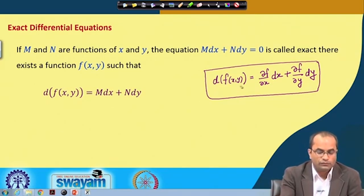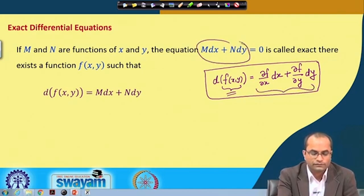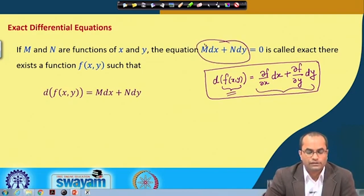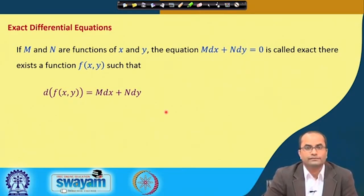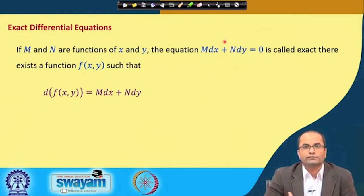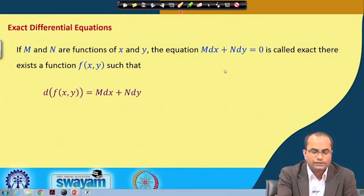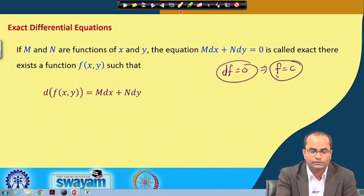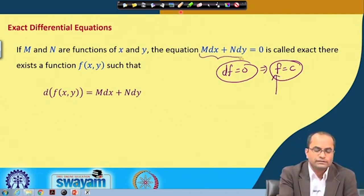So we are looking for a function f whose differential is exactly this differential equation, or rather the left-hand side of this differential equation. We call this an exact differential equation because it is exactly the differential of some function. Once we find such a function, the integration is very easy: the differential of f equals 0, and the solution will be f equals a constant. The main job is to find this function f.